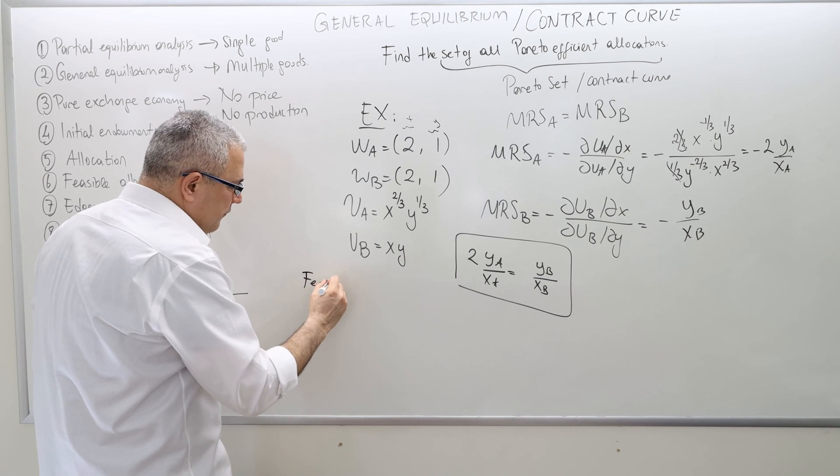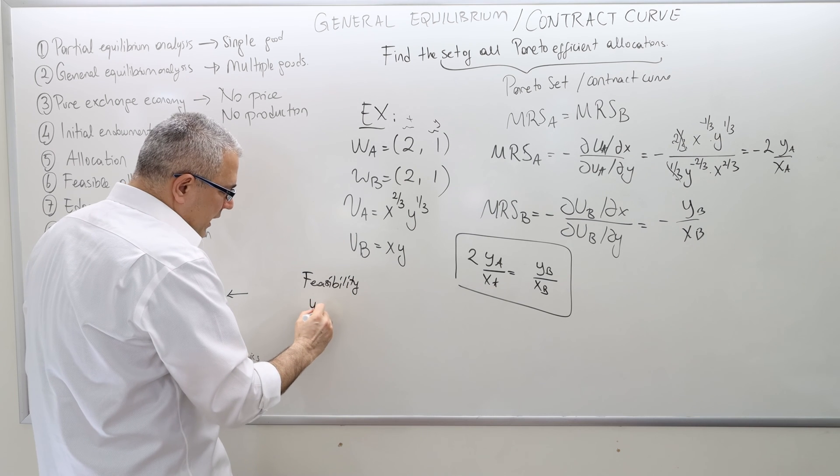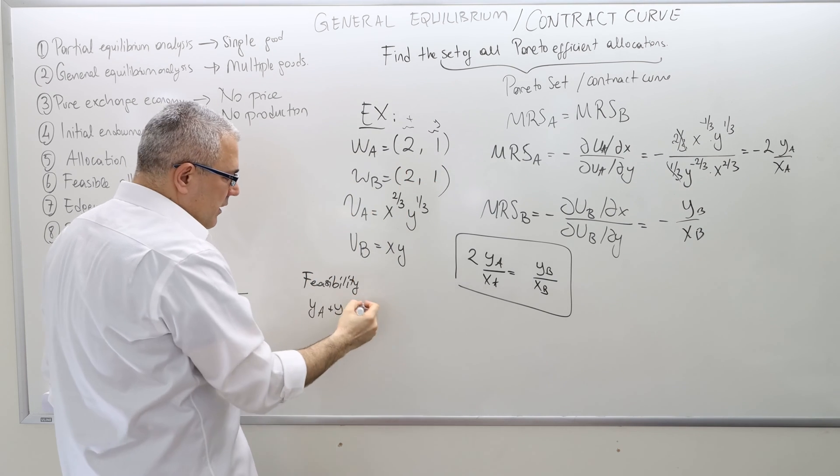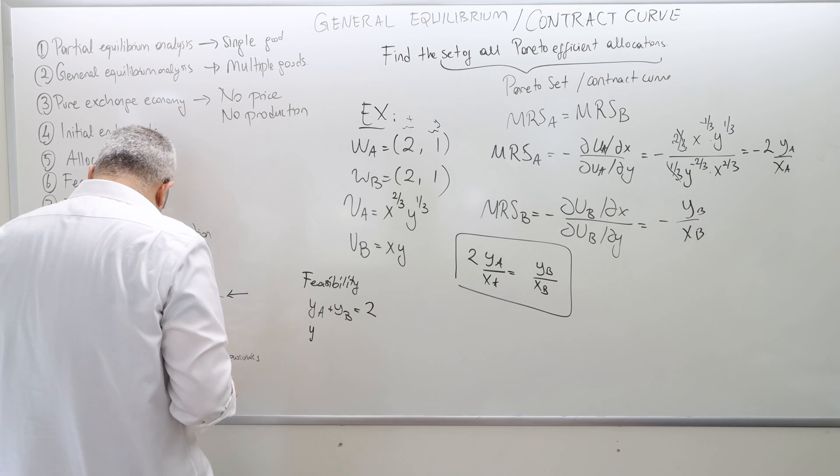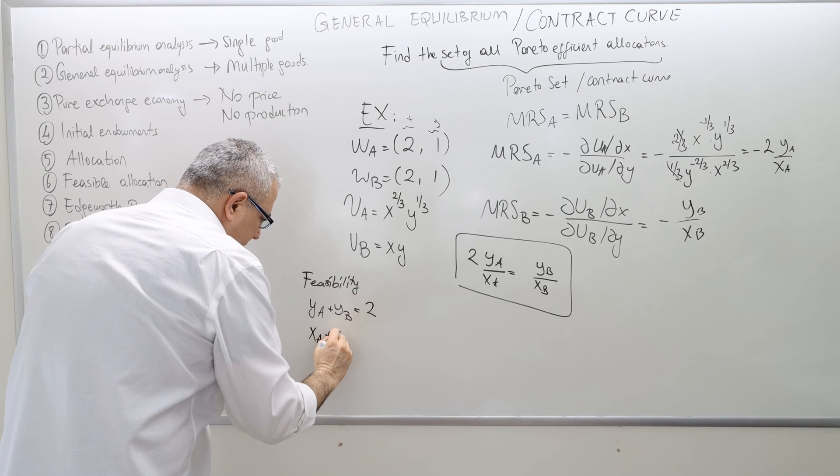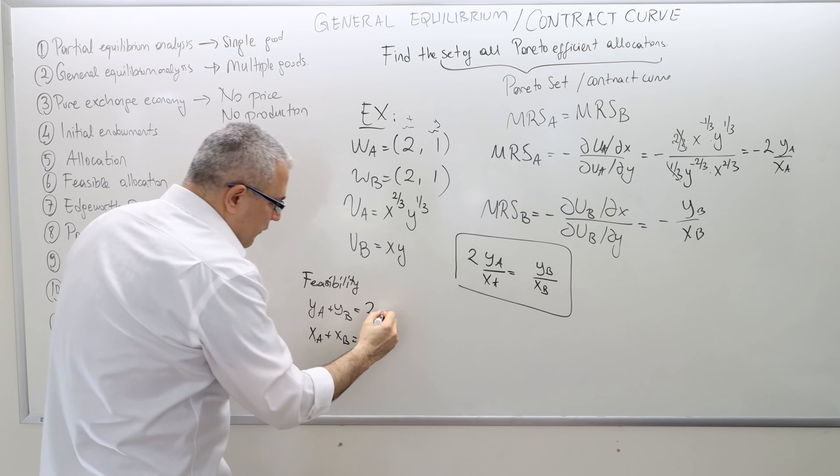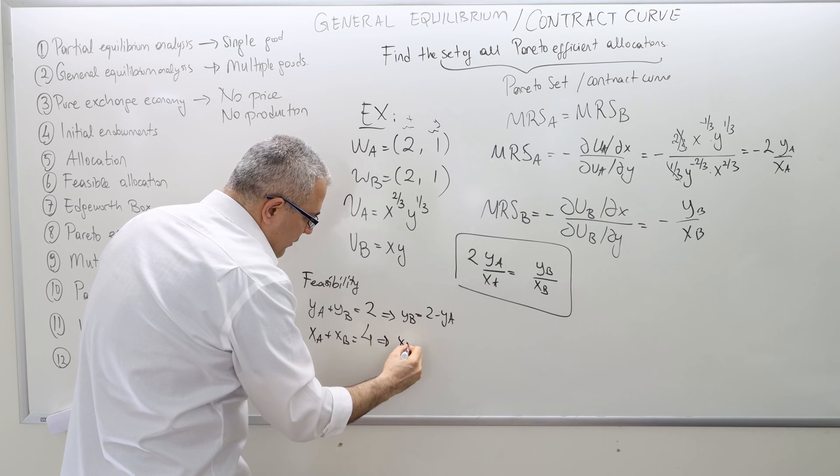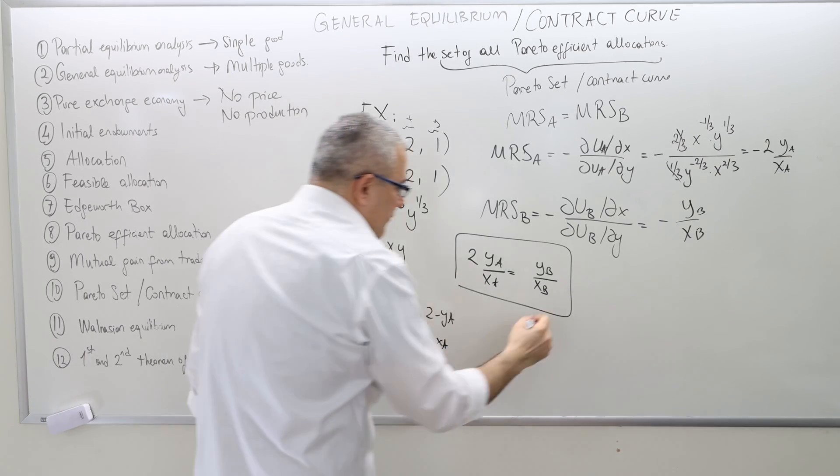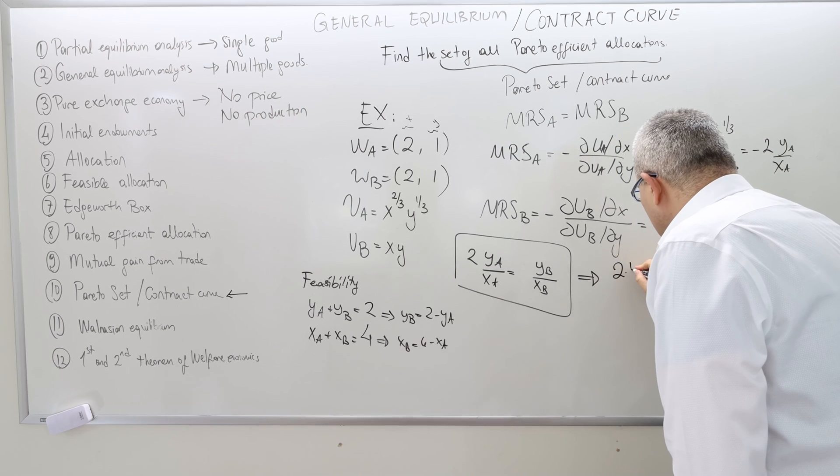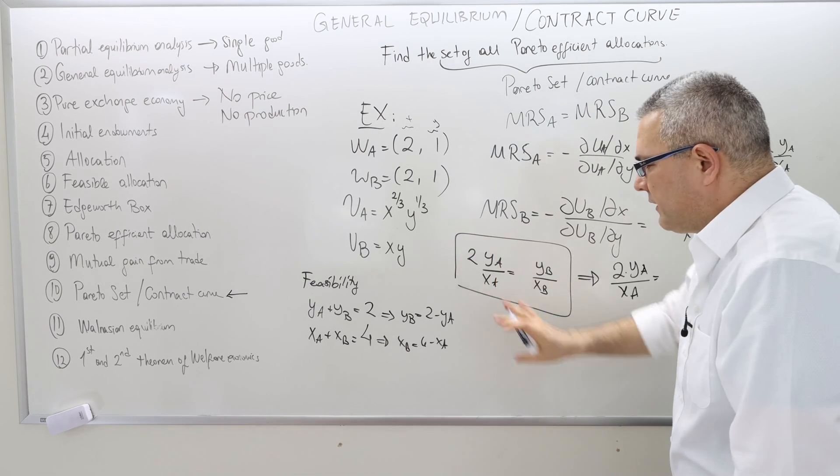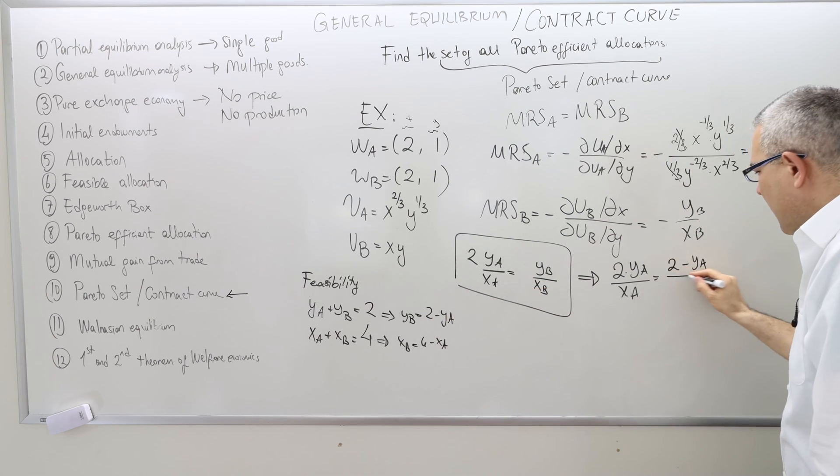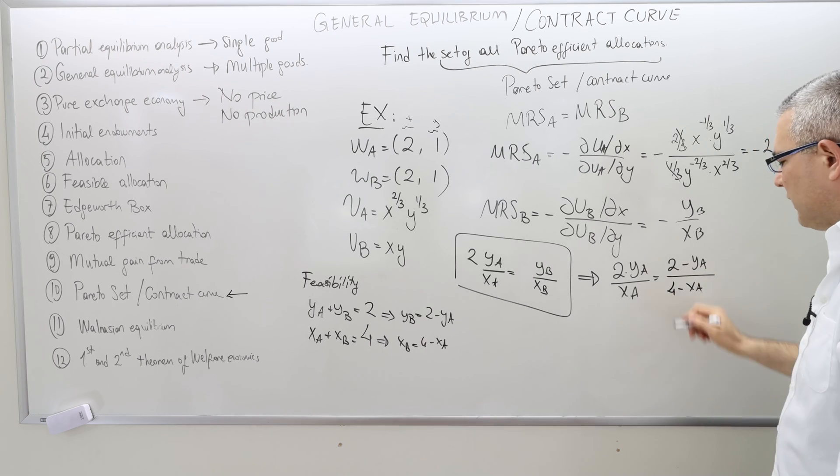The feasibility here is the following: y_A plus y_B, so the total number of y consumption has to be equal to total number of y endowment, which is 2. And then x_A plus x_B has to be equal to 4. Therefore, whenever you see y_B, just plug 2 minus y_A. And whenever you see x_B, just write 4 minus x_A.